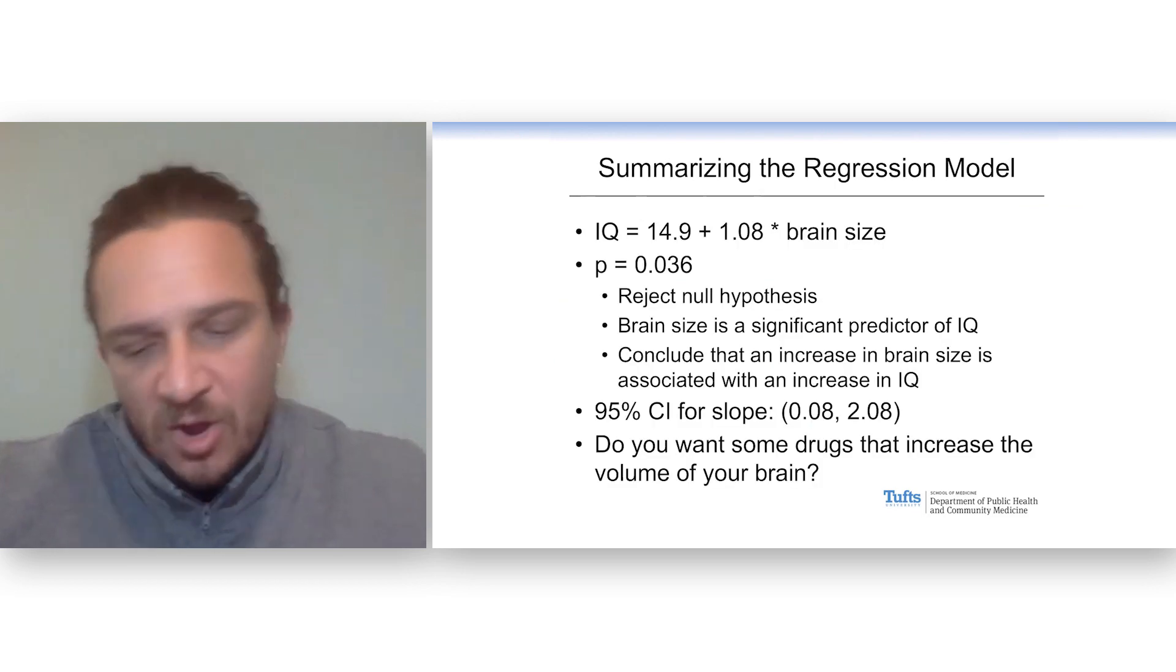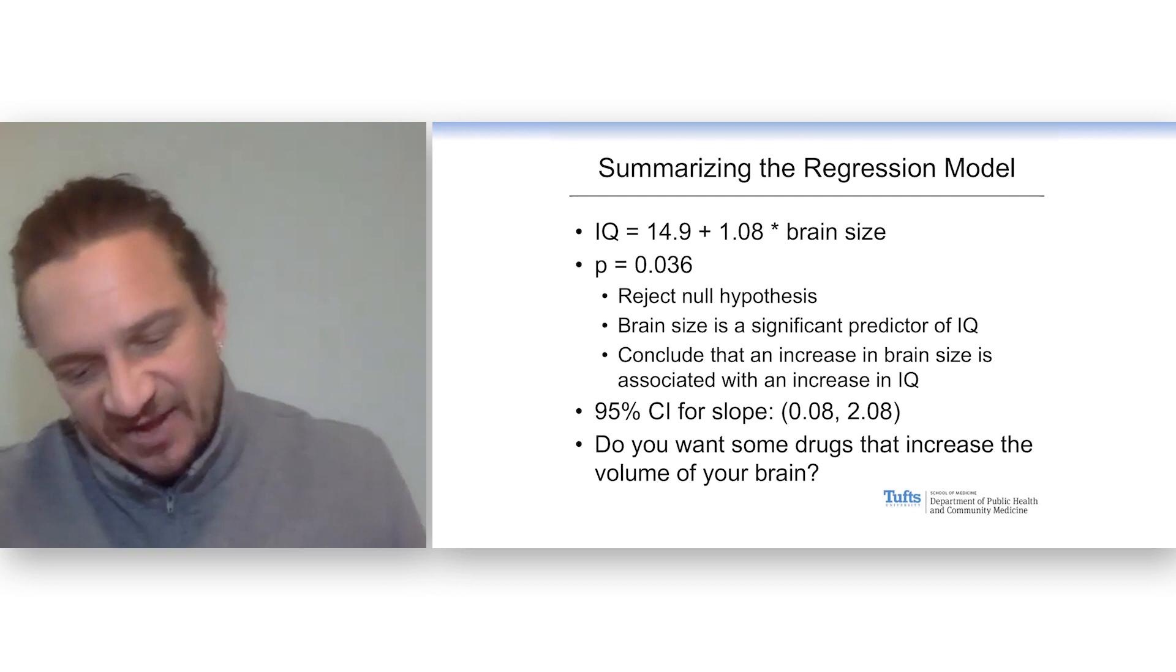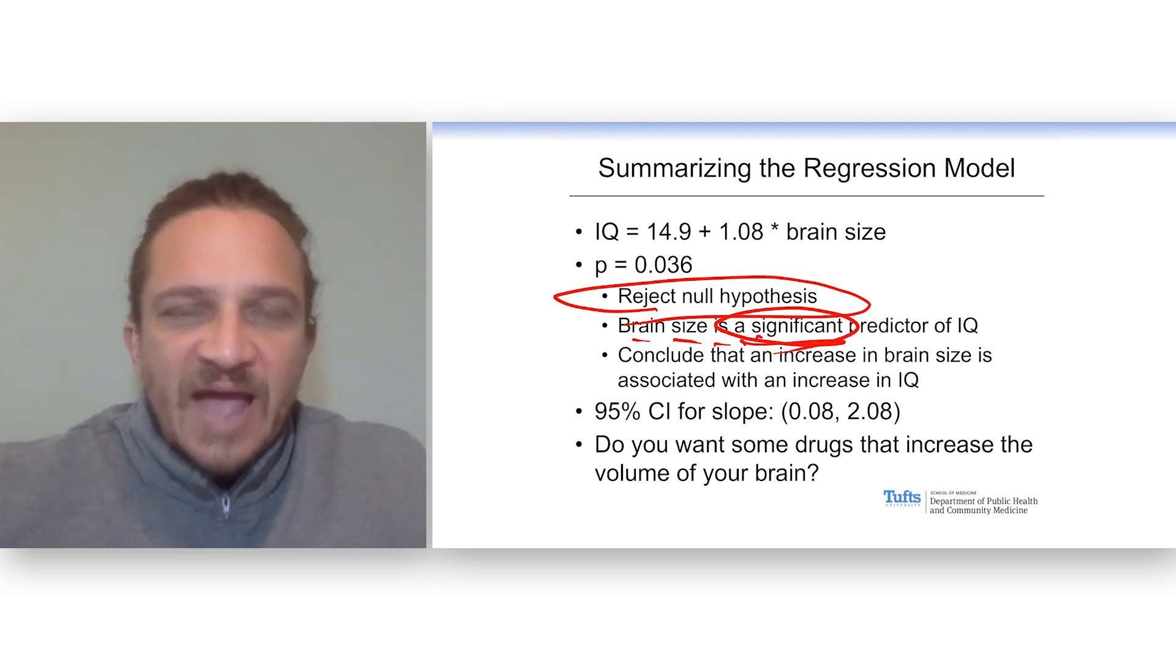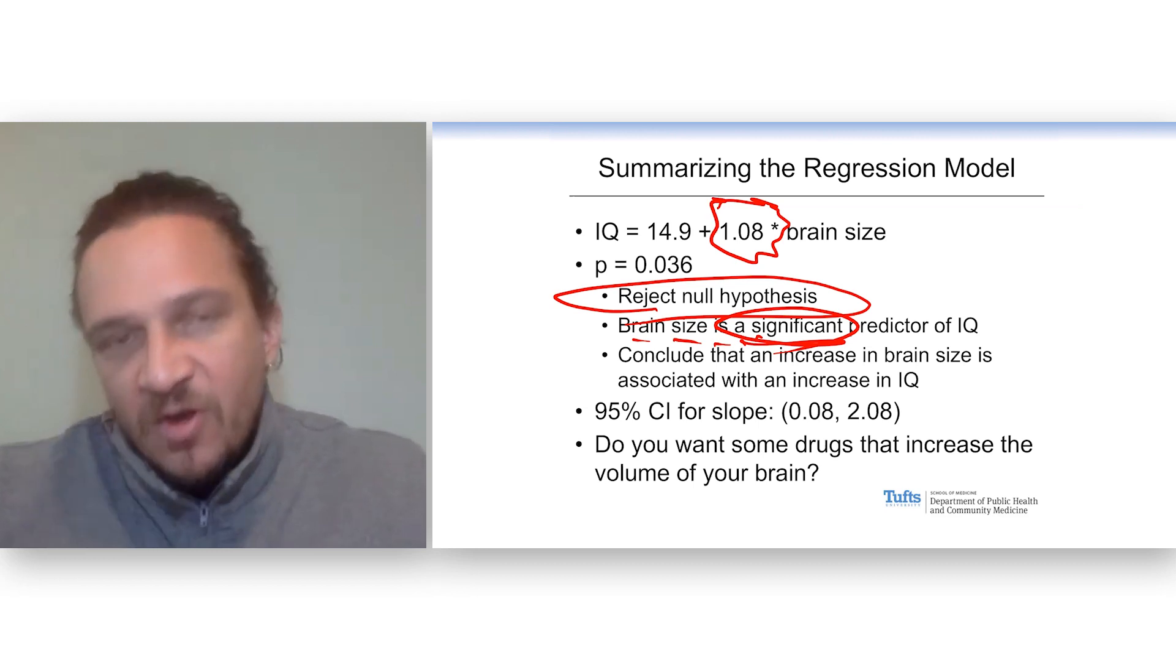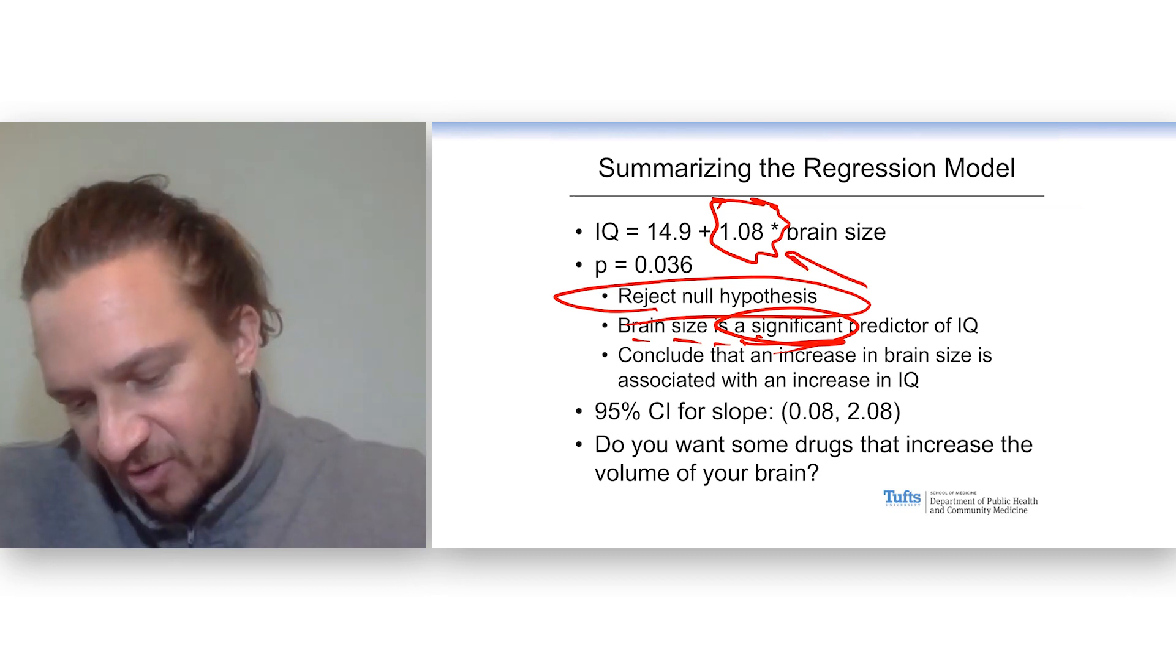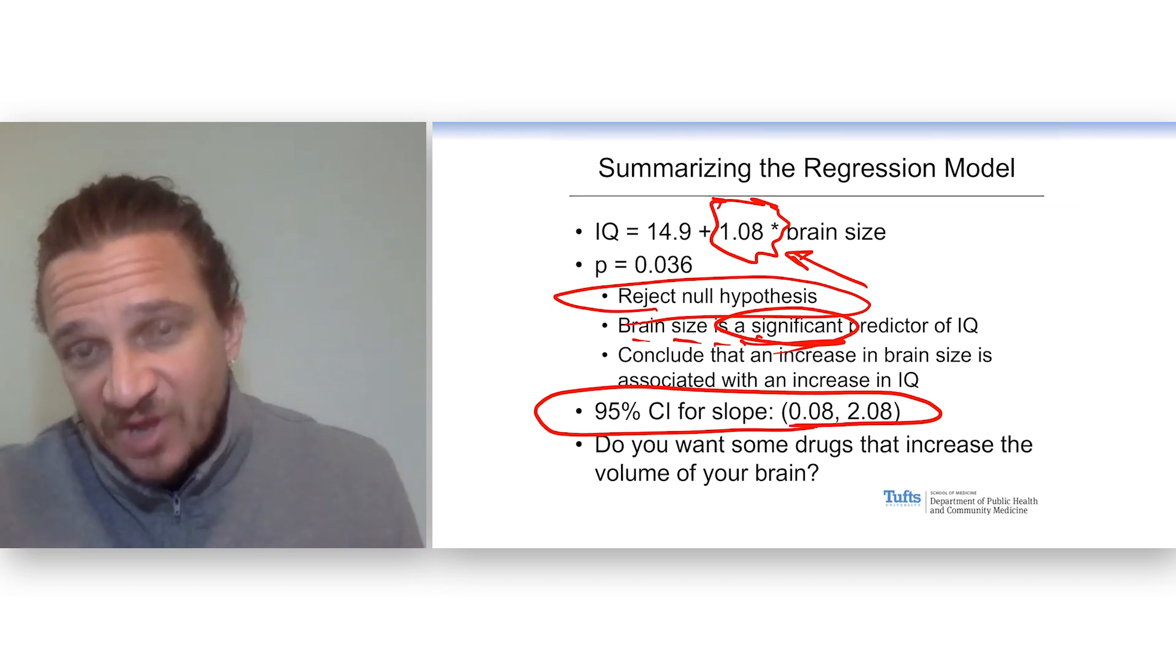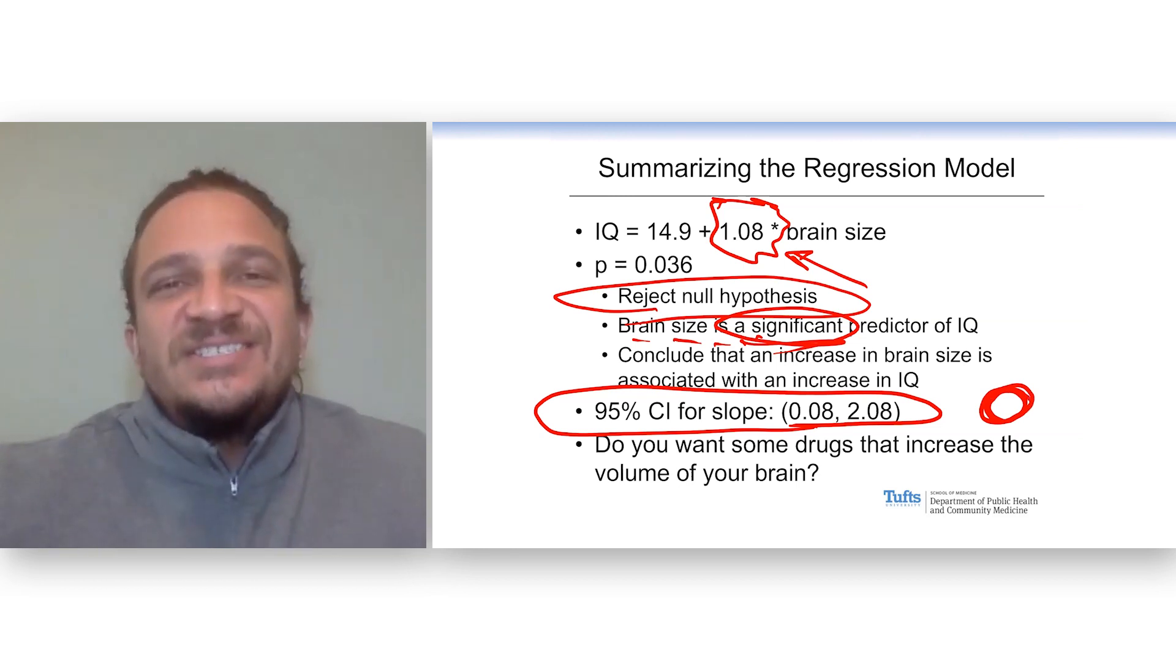So let's summarize the model. Y equals intercept plus slope times X. P is statistically significant, less than our alpha of 0.05. So we reject the null. Brain size is a significant predictor of IQ. How significant? What's the effect? That's why it's so nice to have the slope. For every one unit increase in brain size, on the average, your IQ goes up 1.08 points. It's statistically significant. We can look at the confidence interval for the slope. Notice, what is not in that CI? Zero. Because that null value is not in there, it's a statistically significant relationship.